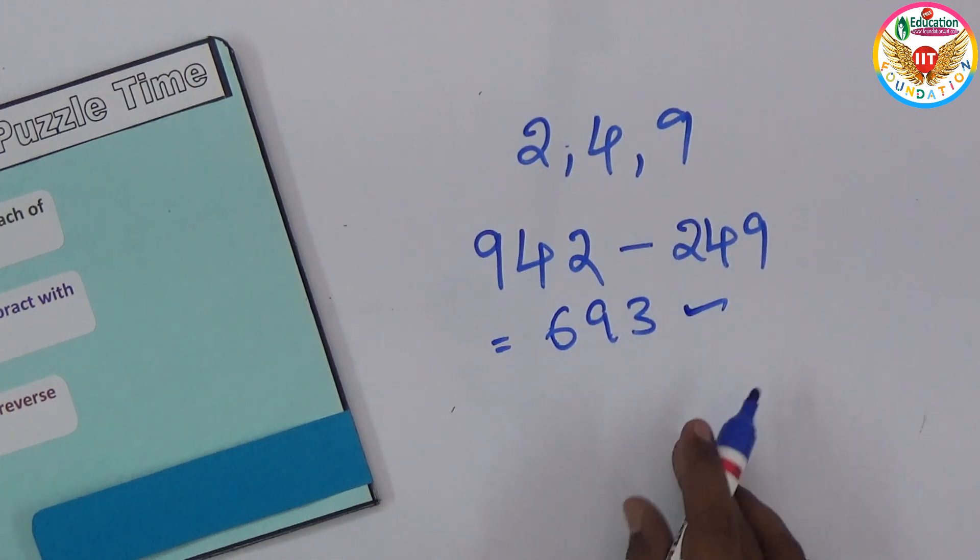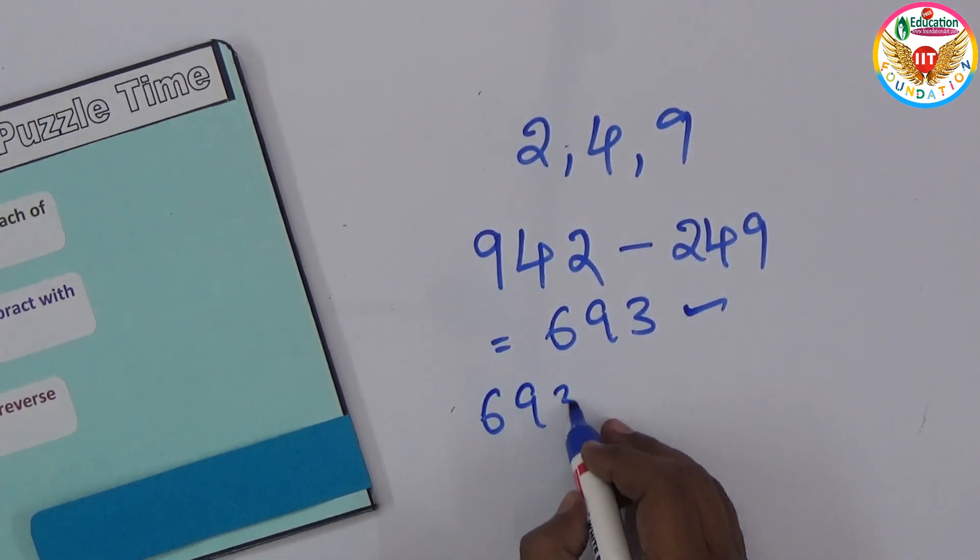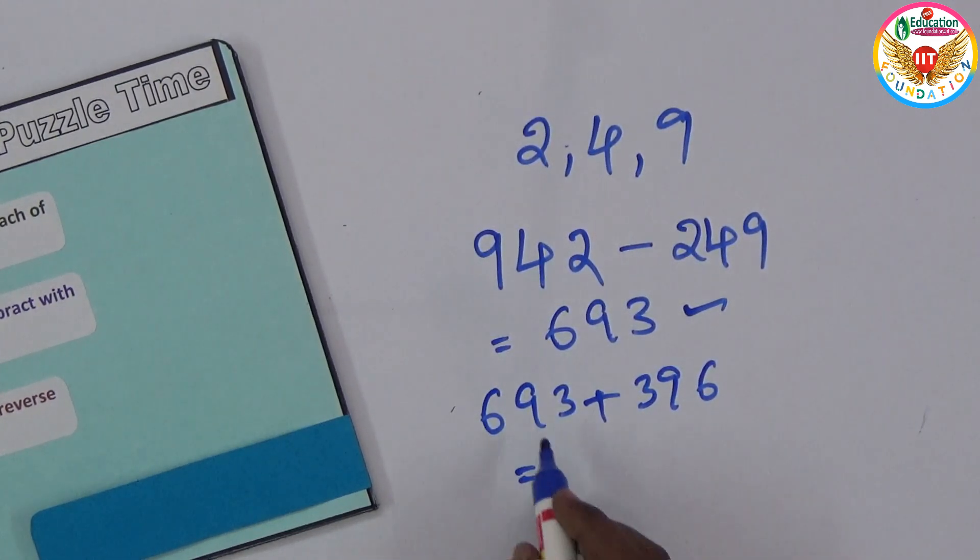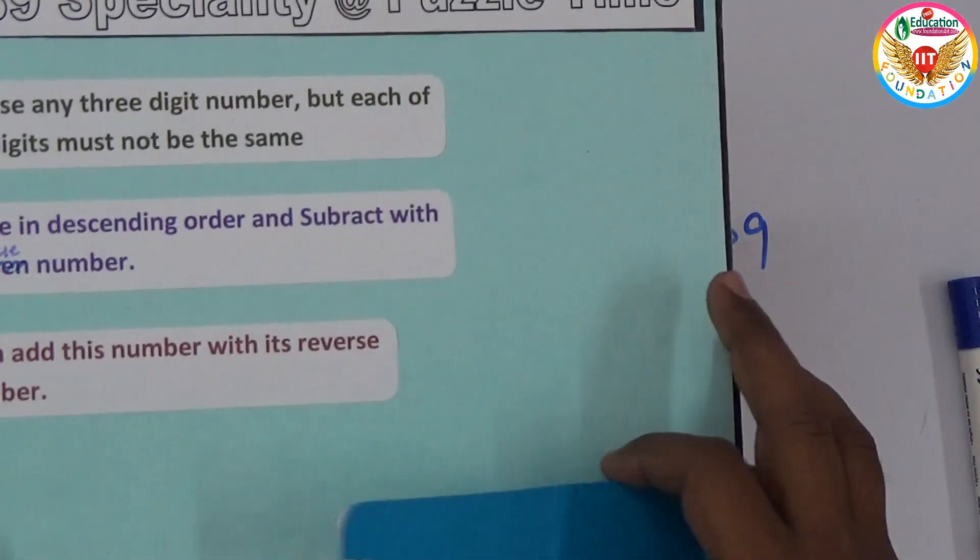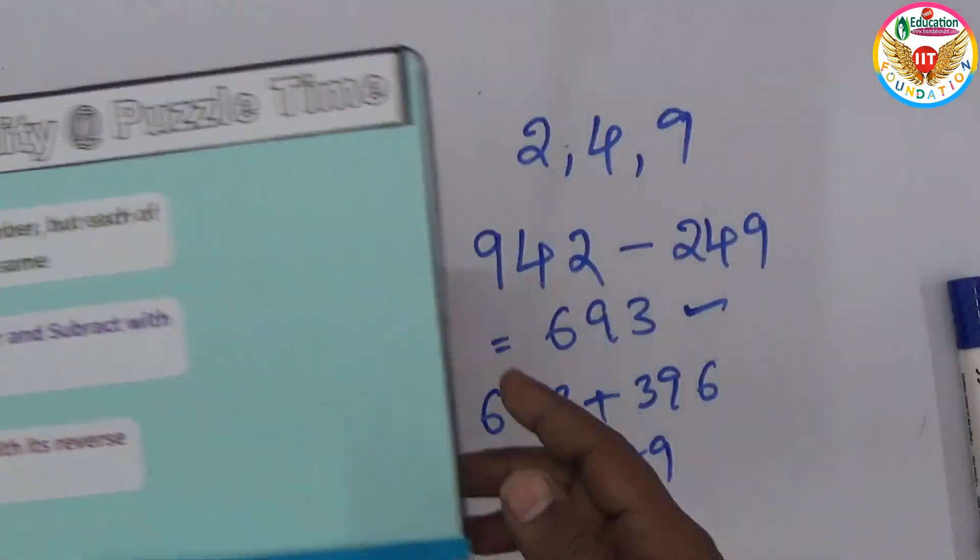Now take this number and reverse and add to the same. That is 693 plus 396. We know that 693 plus 396 equals 1089. So always the answer will come as 1089. You can make this simple question and have fun with math.